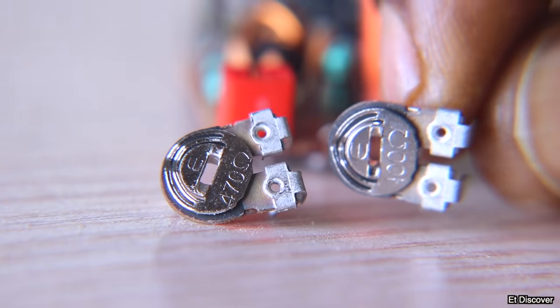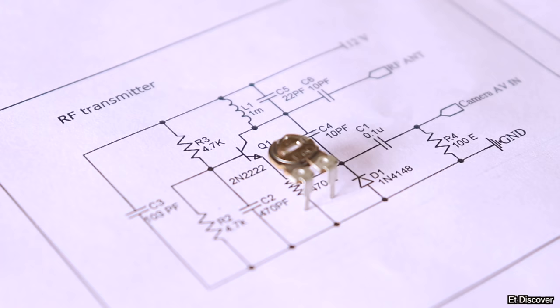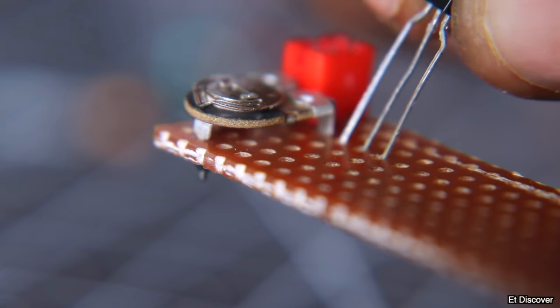And then here I need a 470 ohms potentiometer which will control the video signal. You can use here 100 ohms potentiometer if you want to run this transmitter in 3.7V. And definitely then we need a transistor. I will use the 2N2222 transistor here.